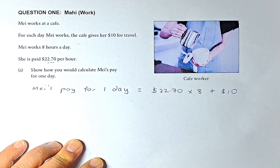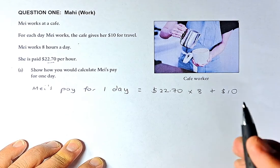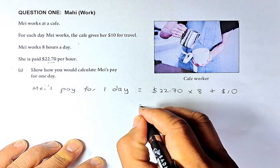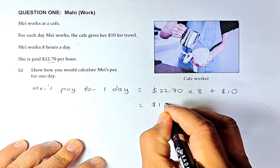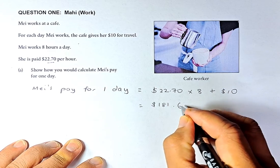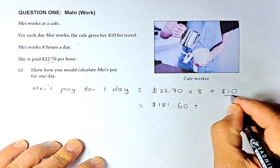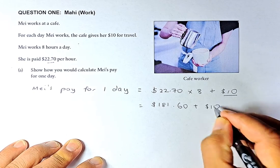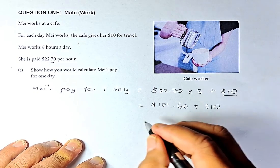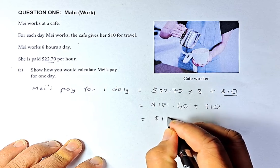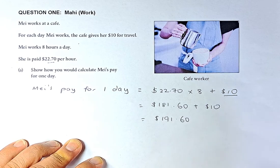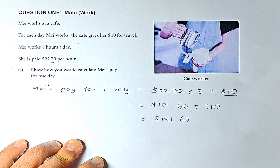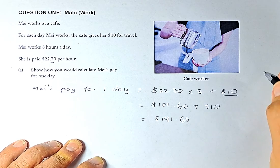Use the calculator: 22.7 times 8. The answer is going to be $181.60. And then you're going to add the travel that the company pays, $10. The total amount is $191.60. If you get it right, you get Outcome 1.